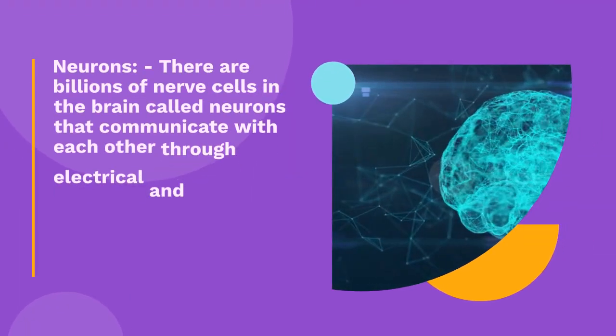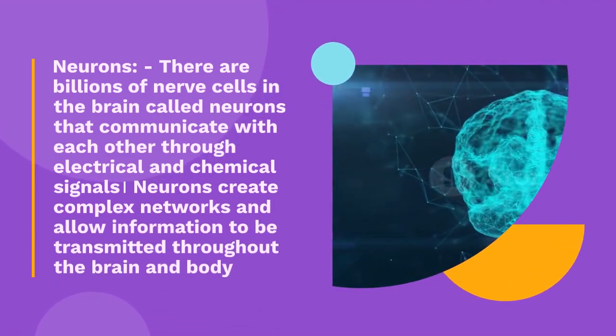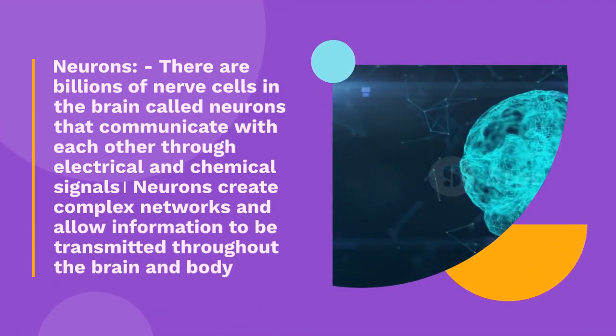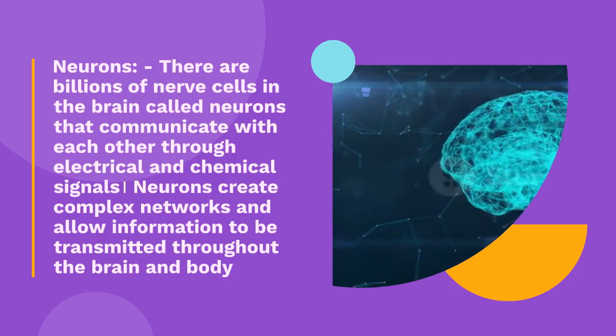Neurons: there are billions of nerve cells in the brain called neurons that communicate with each other through electrical and chemical signals. Neurons create complex networks and allow information to be transmitted throughout the brain and body.